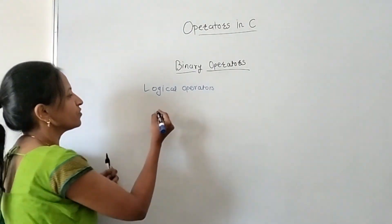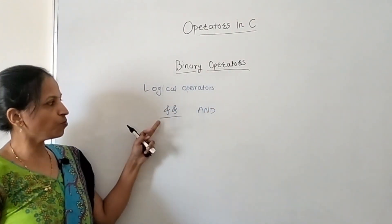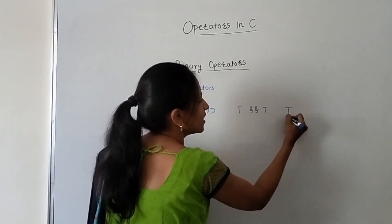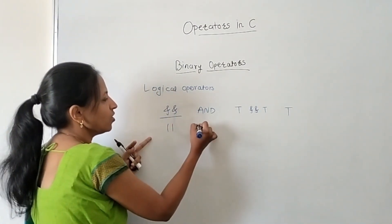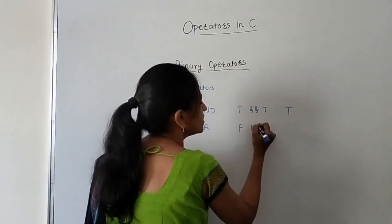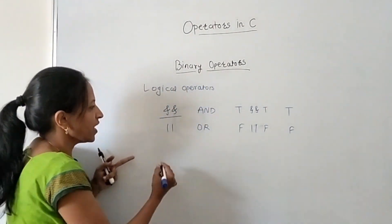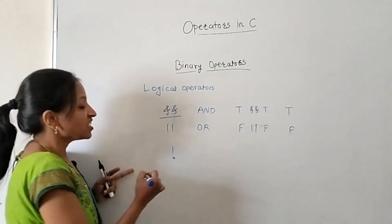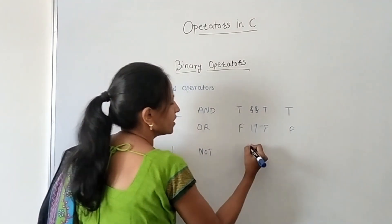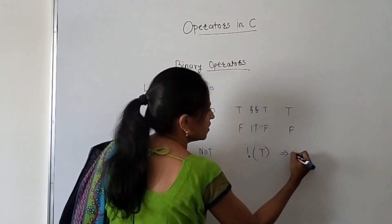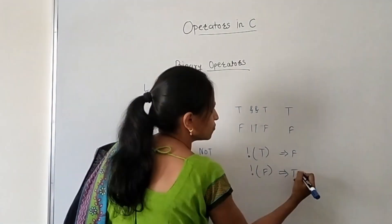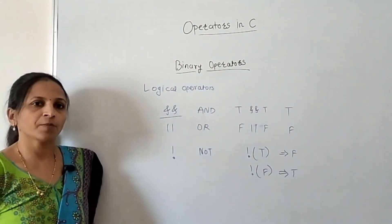To summarize logical operators: logical AND returns true only when both operands are true, otherwise false. Logical OR returns false only when both operands are false, otherwise true. Logical NOT reverses the value of its single operand — true becomes false, false becomes true.